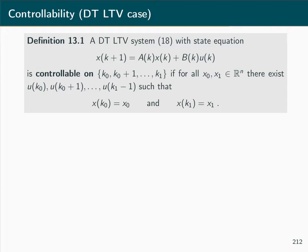This system is called controllable on an interval from k0 to k1 if for all possible states x0 and x1, there exists a corresponding control sequence u(k0) up to u(k1-1) such that starting from the initial state x(k0) = x0, we end up at the final state x(k1) = x1. In other words, the system is called controllable on a given time interval if for any given initial state and any given goal state, it is possible to find a sequence of control inputs that steers the system from the initial state to the goal state.